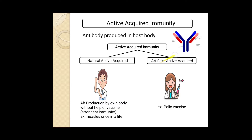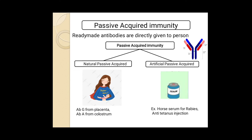Now, what is artificial active acquired immunity? The 'active' term still refers to your own antibodies, but 'artificial' means it is triggered by a vaccine. Suppose you have previously taken a polio vaccine — with the help of that vaccine, your immune system had already produced antibodies against the polio virus. Now if the same polio virus enters your body, your stored antibodies will attack it, and that response is called artificial active acquired immunity.